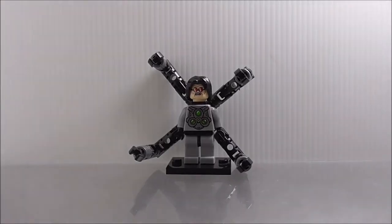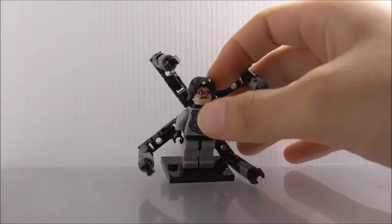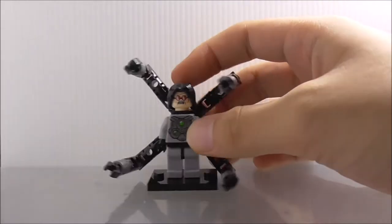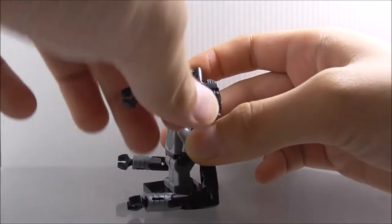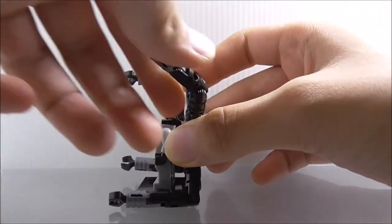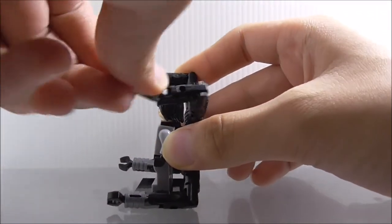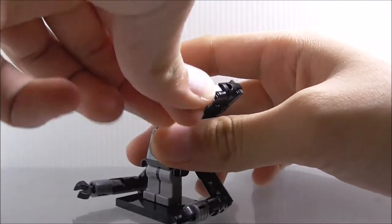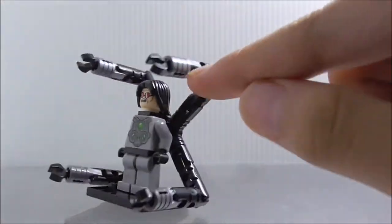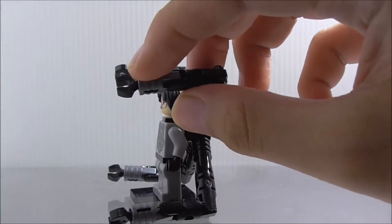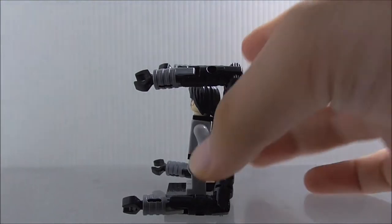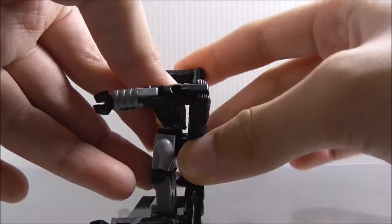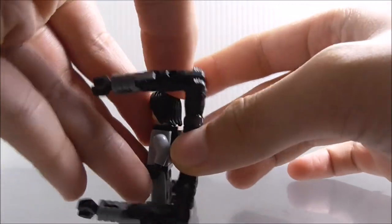So this is the Doc Ock figure itself. Let's start with his tentacles. You can see they are all hinged or ratcheted, I guess. At each end you got these clip pieces and you can kind of clip onto stuff and make him hold like guns or something. The tentacles, you can kind of turn them around.